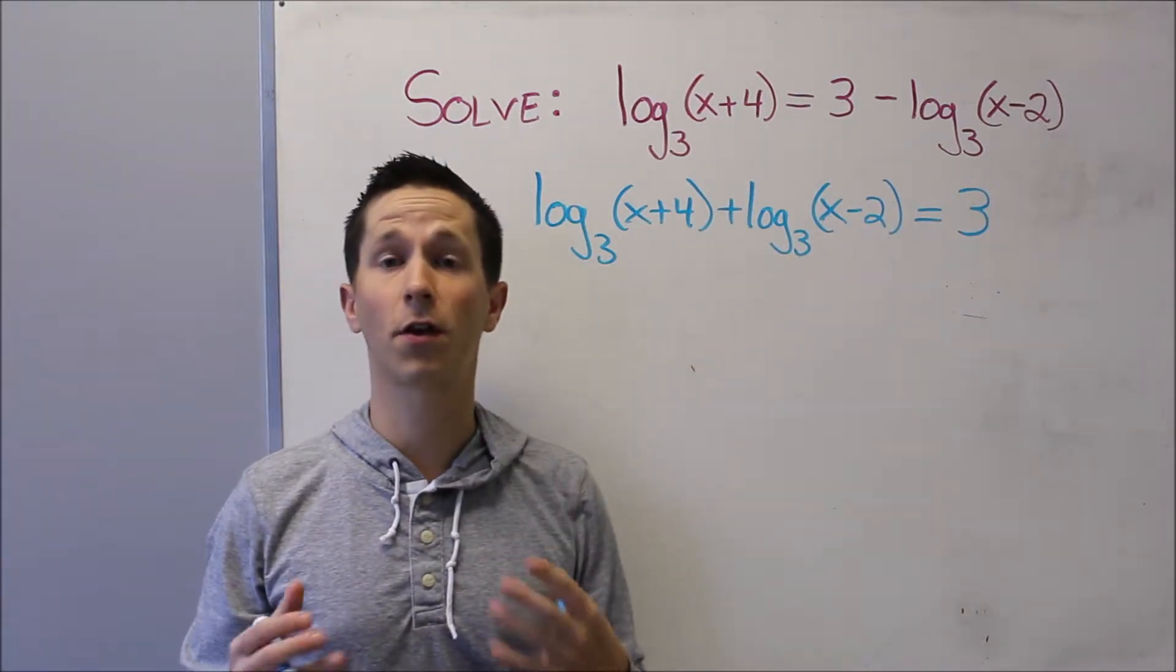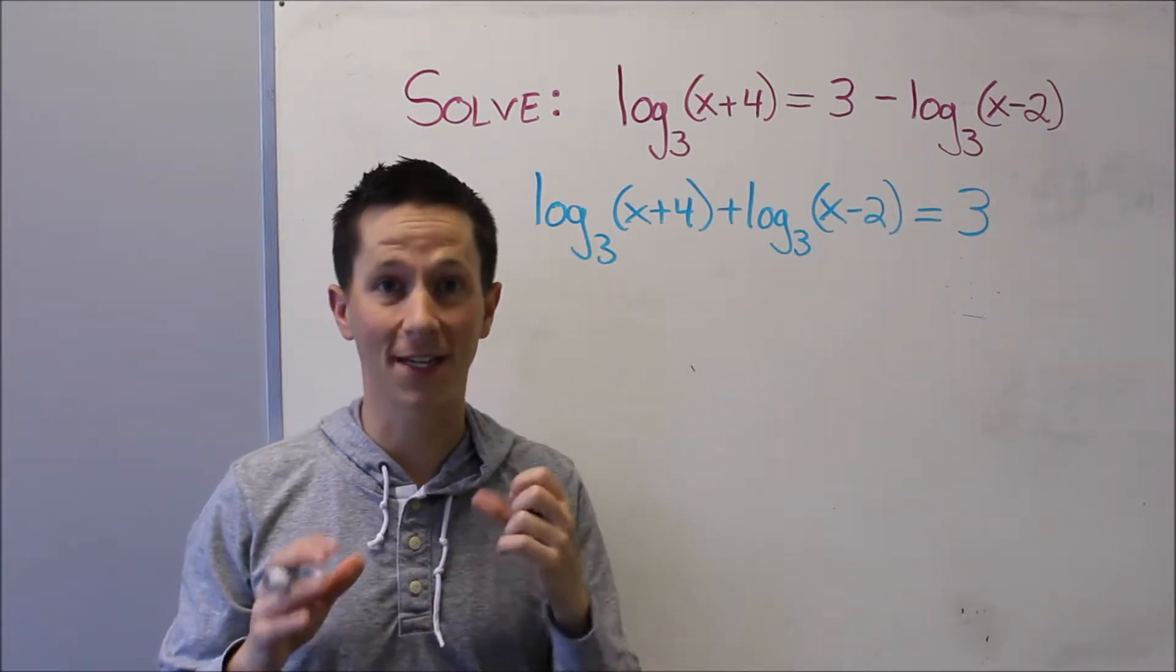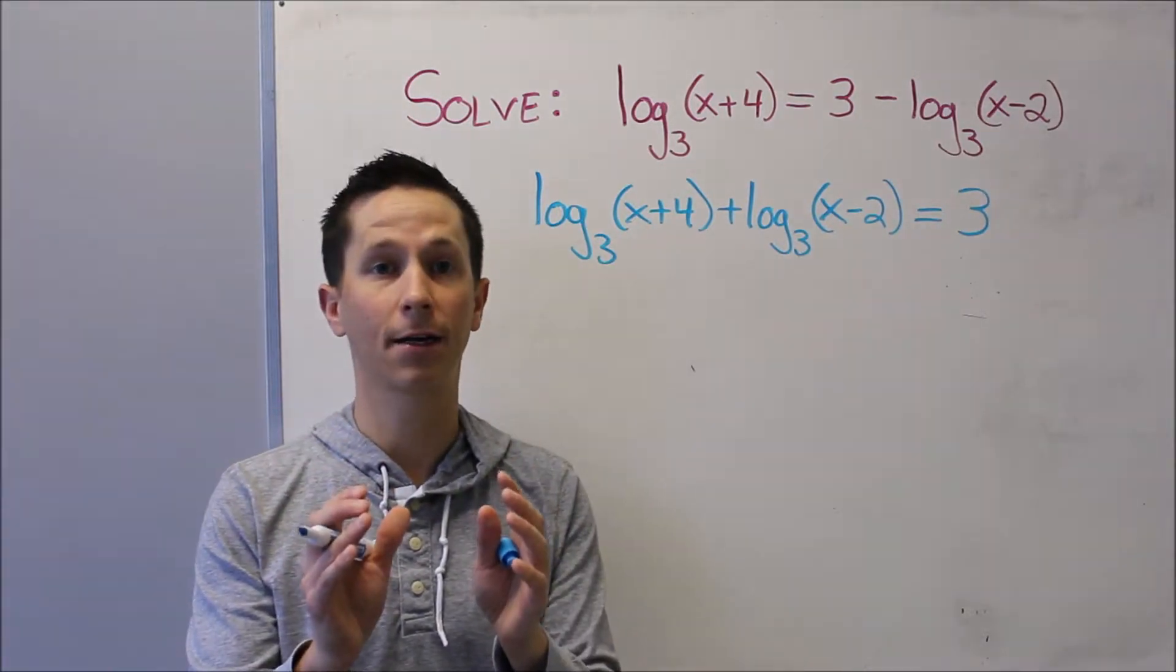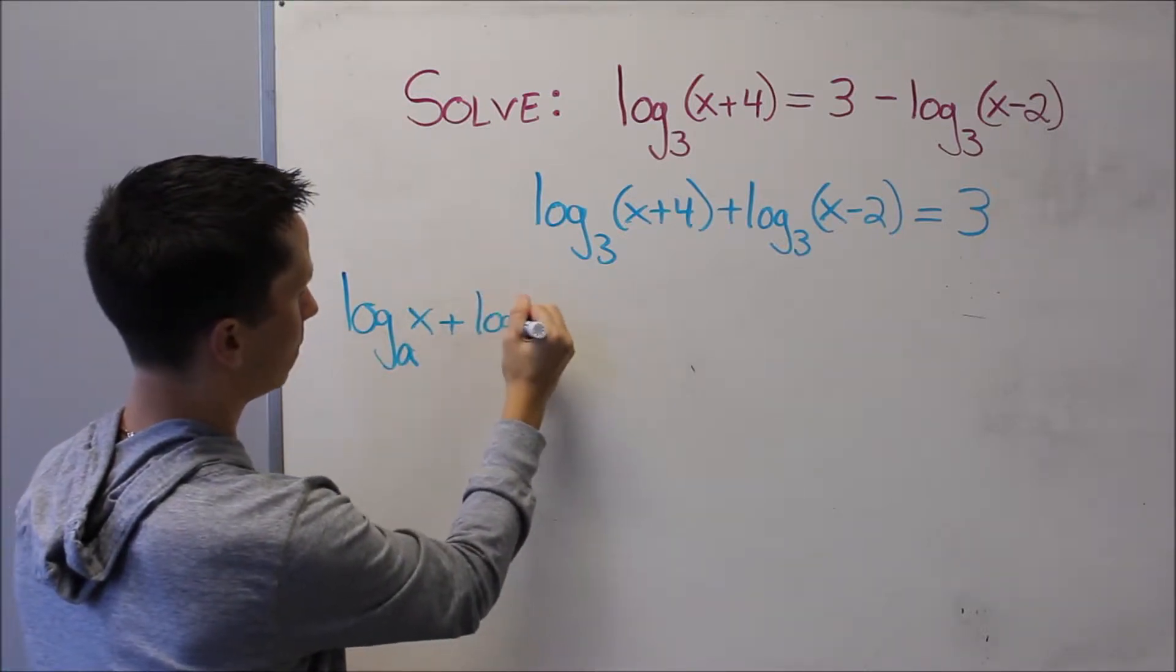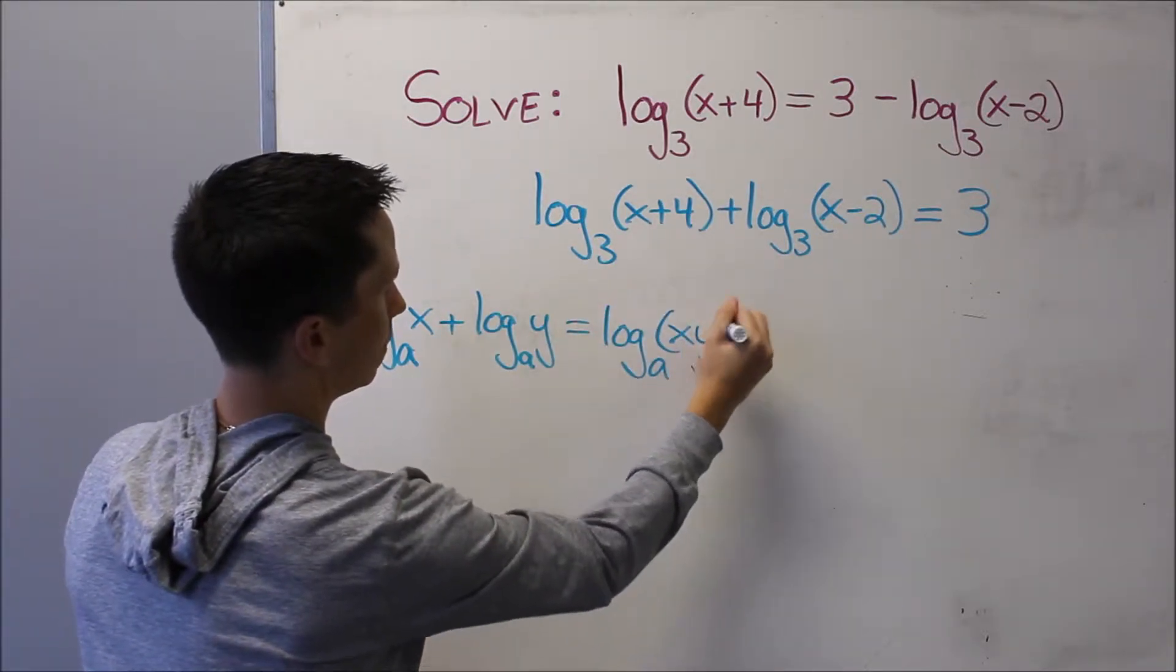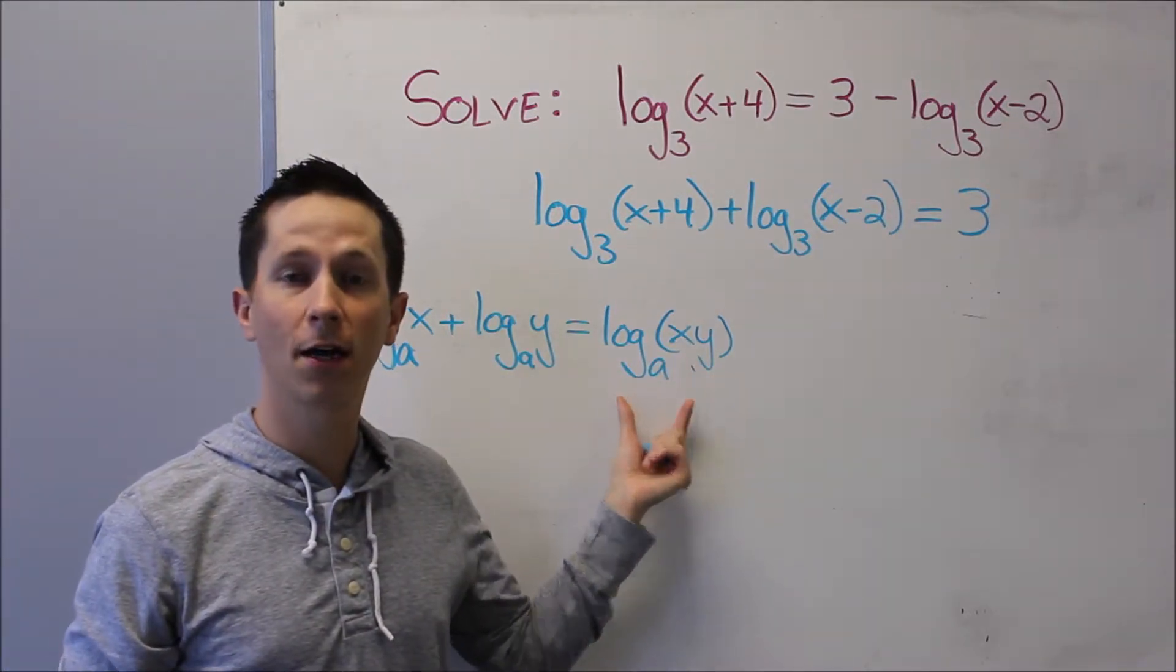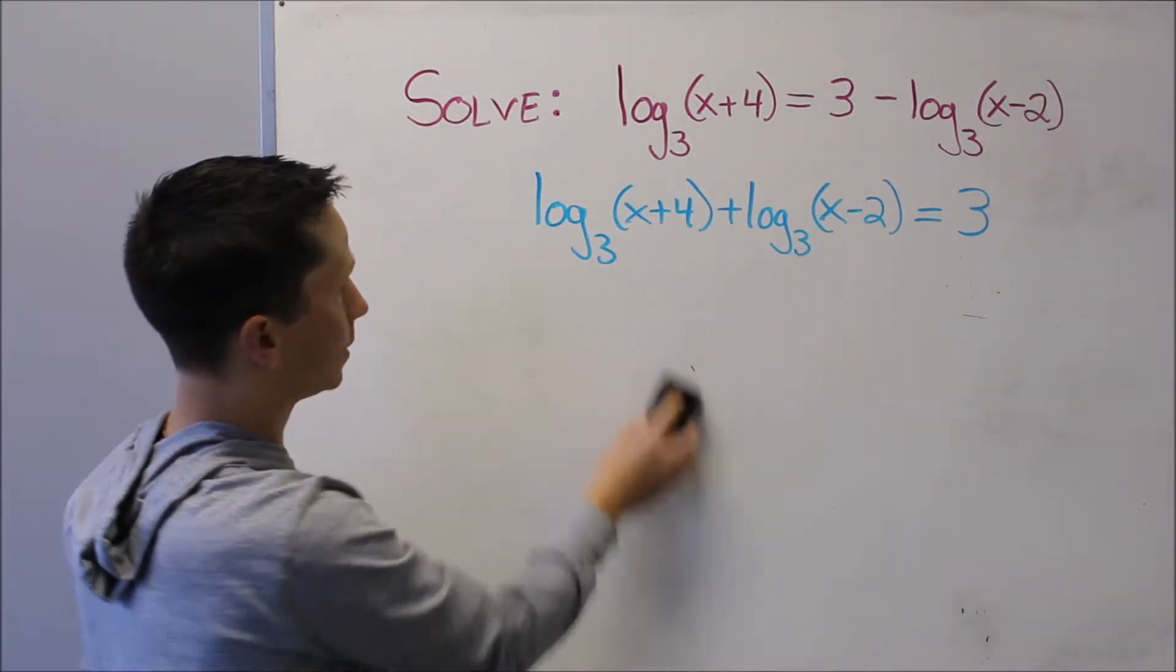The reason we do this is so that we can use our log laws. The first law is that when two logarithms of the same base are added together, we can collapse them into one logarithm of that same base and multiply the terms inside. Base A base A, two added together, we can combine it into one logarithm of base A, where the terms inside are multiplied together. So that's exactly what we're going to do here.